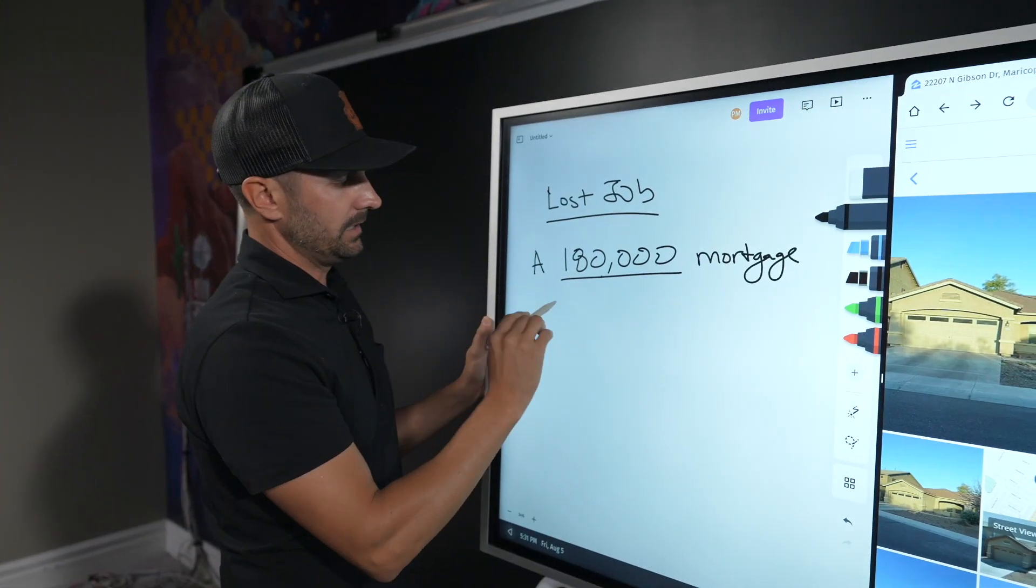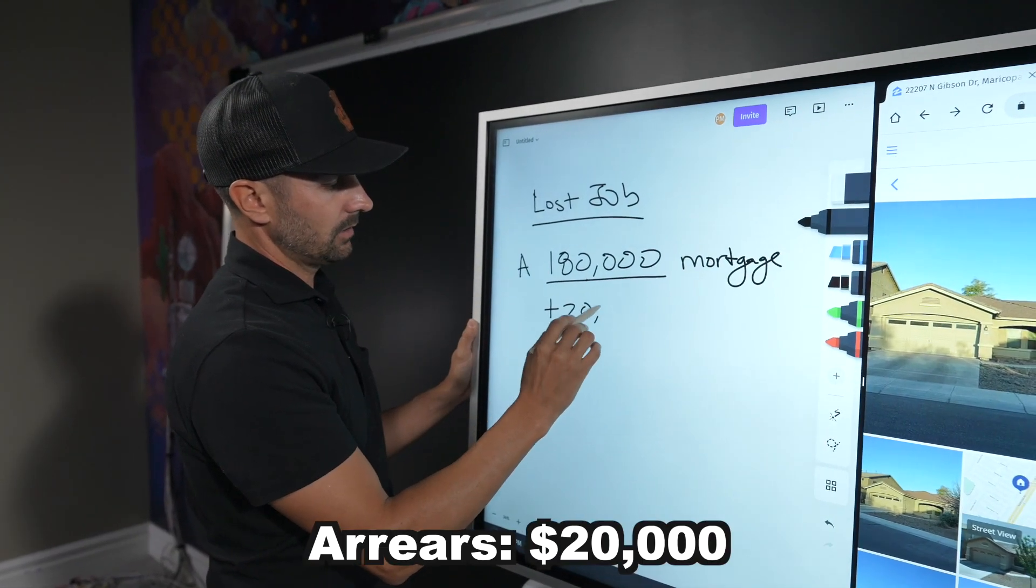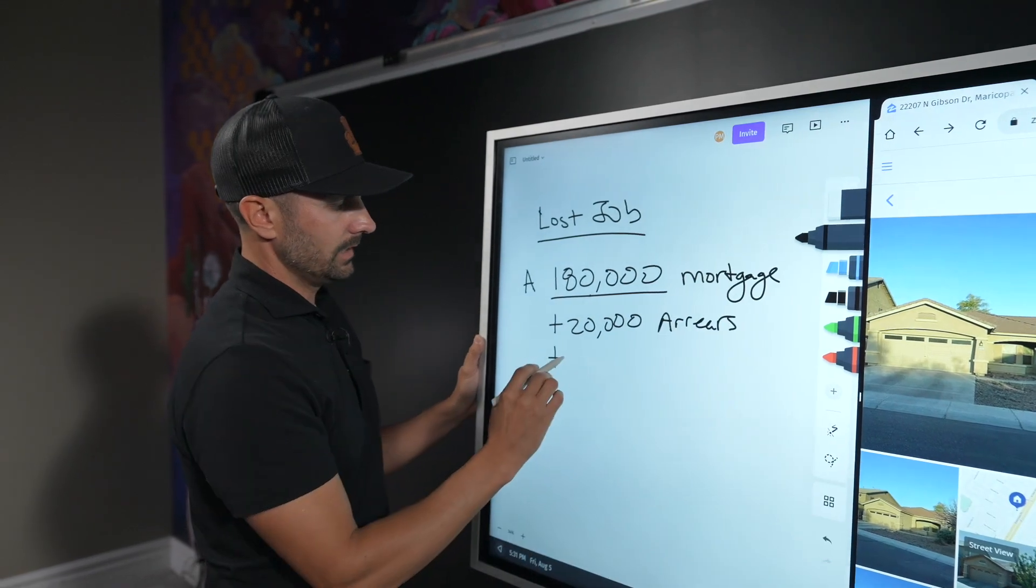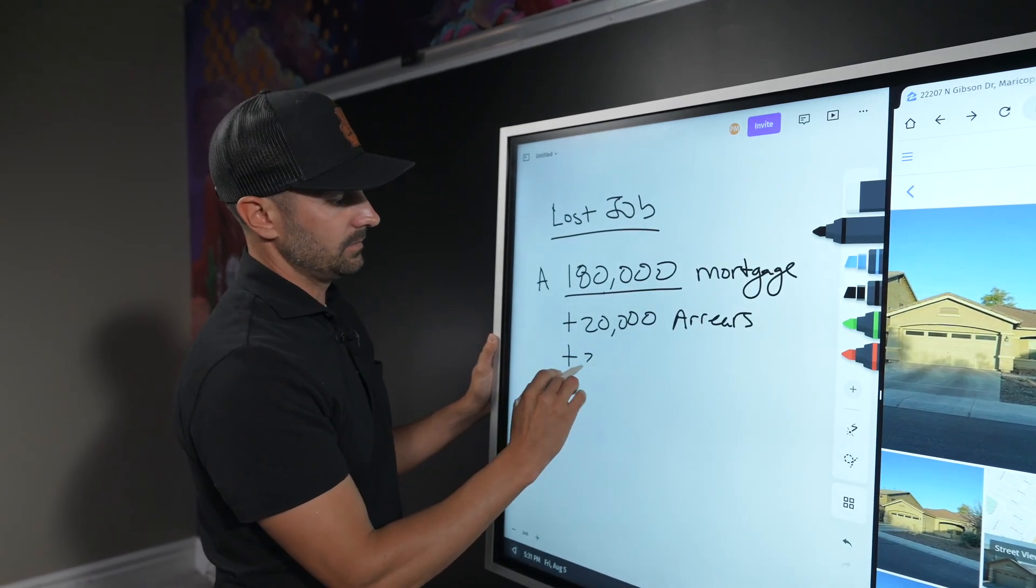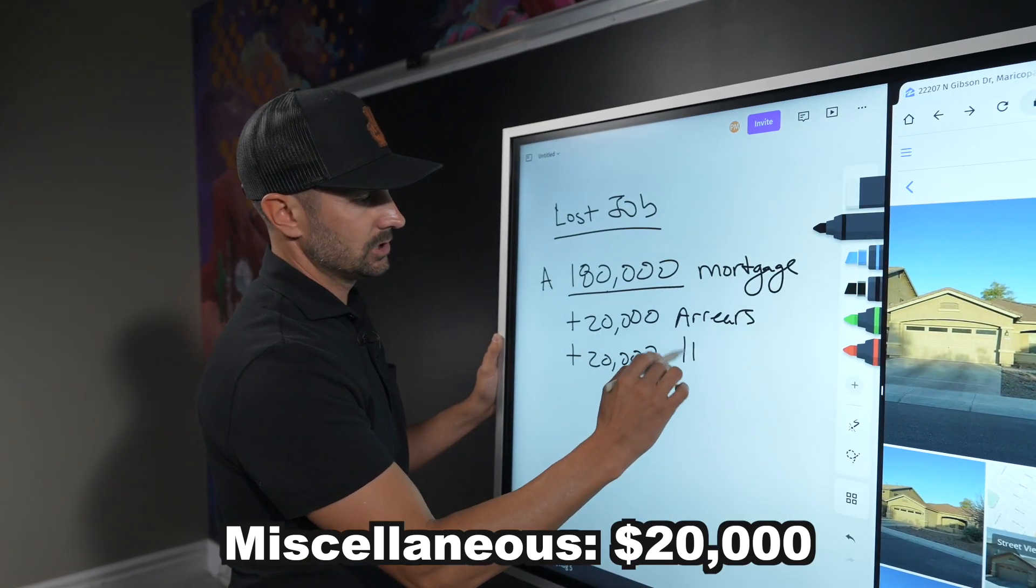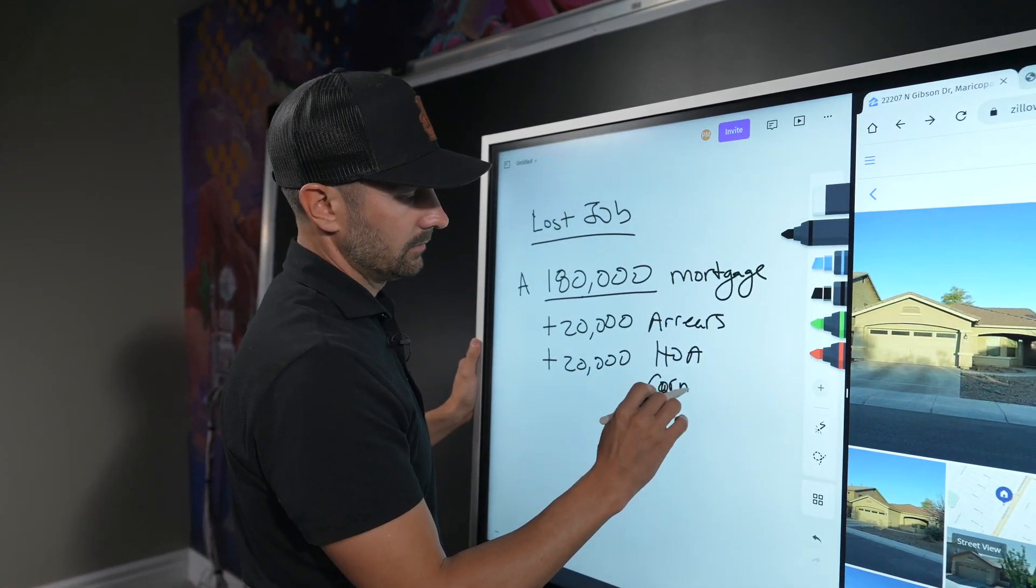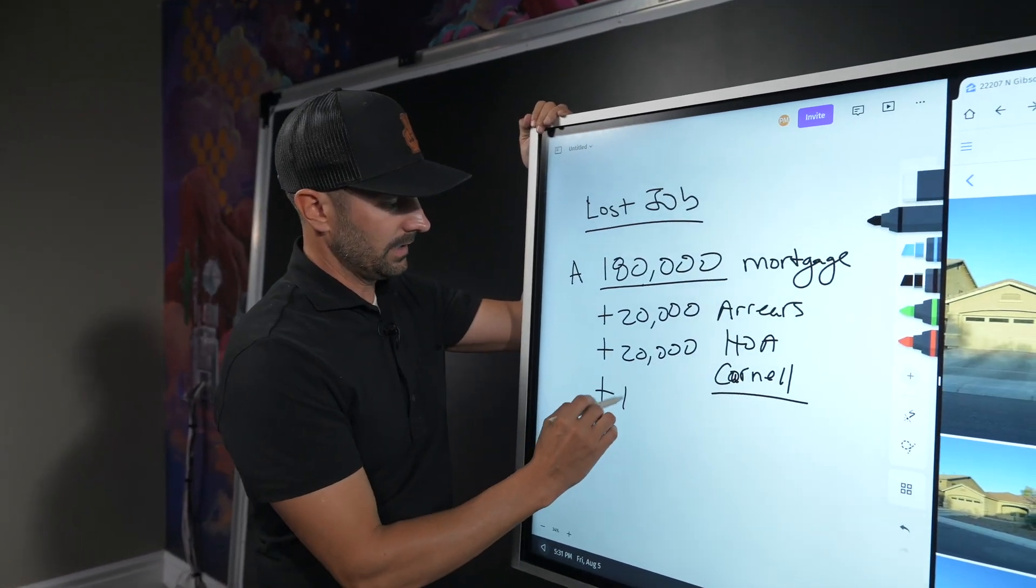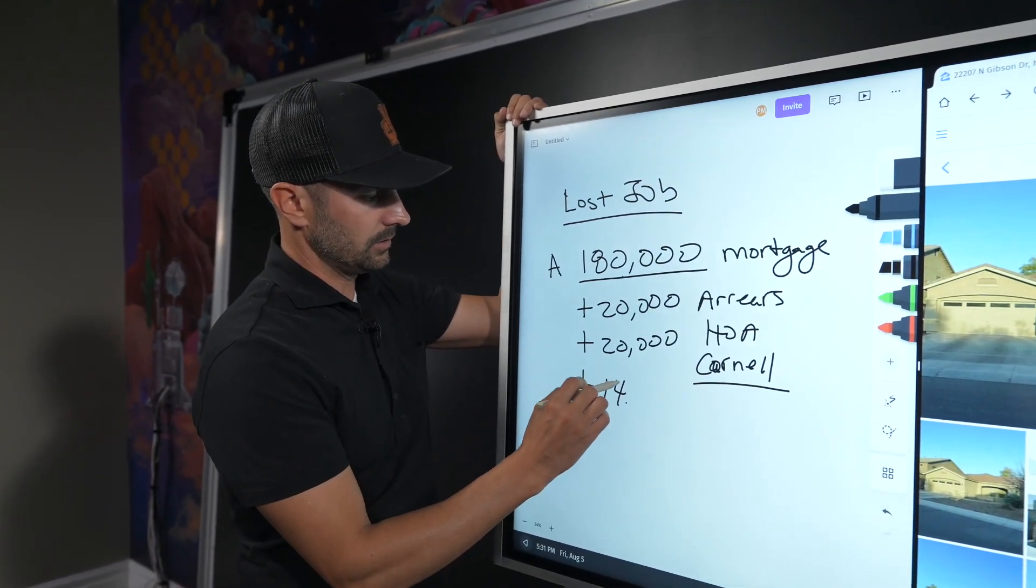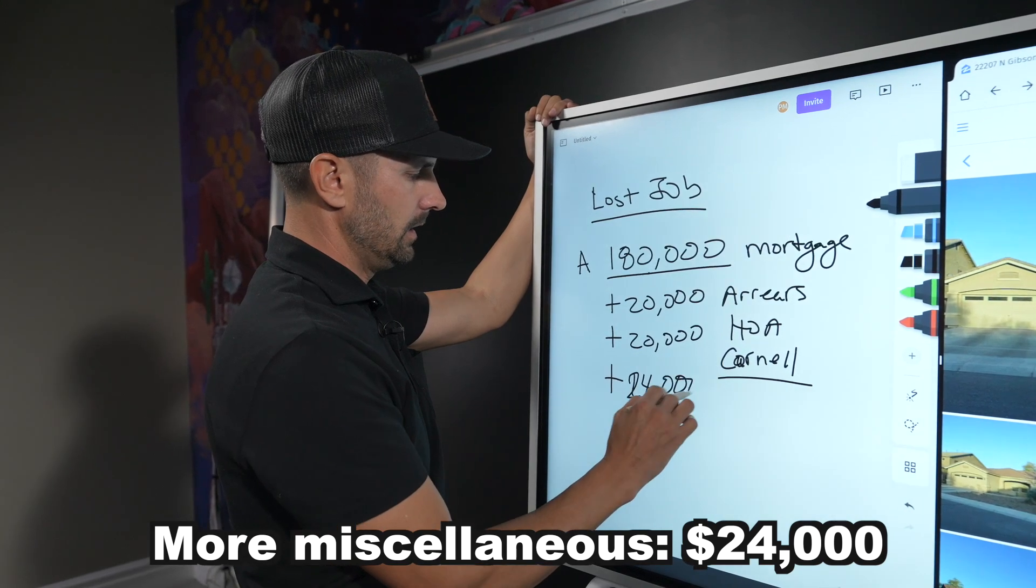The house, he owed $180,000. That's what he owed on the mortgage. The problem is he owed $20,000 in arrears. So that's late payments. We gave him another, let's say, miscellaneous $20,000. That's HOA was owed.